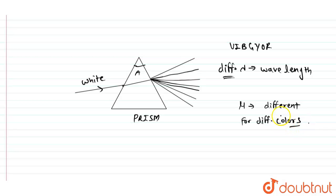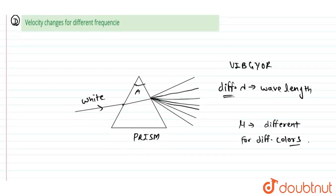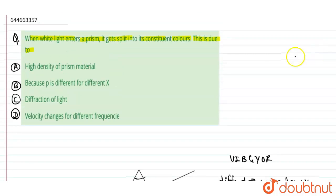Mu is different for different colors. So when white light strikes the prism, it splits into seven colors. This is due to the value of mu being different for different colors of light. They also have different wavelengths. So the difference in wavelength and difference in refractive index mu account for the splitting into constituent colors.